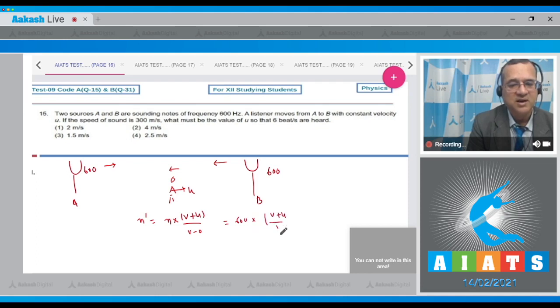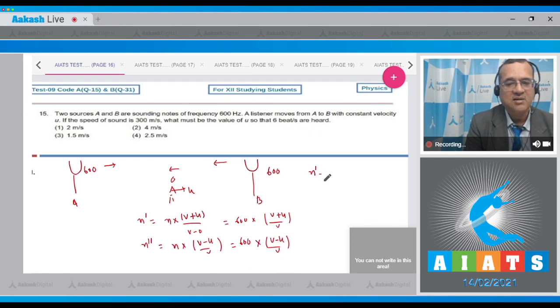The frequency coming from here and the observer is moving away, so n double prime would be equal to real frequency with observer moving away - v minus u divided by v, which is equal to 600 into v minus u divided by v. It's given that n prime minus n double prime, which is the beat frequency, is equal to 6. So subtract this equation: 6 becomes equal to 600 into 2u divided by v.